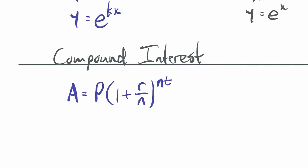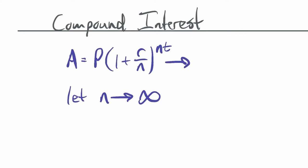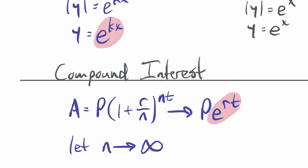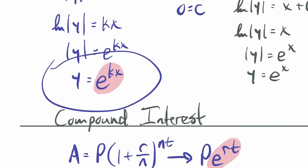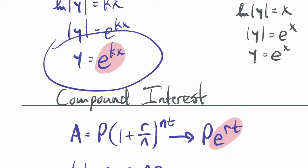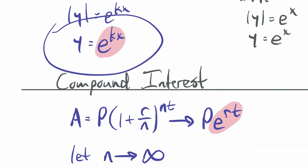What if you compounded monthly, weekly, daily, or infinitely often? If you let n go to infinity — the number of compounding periods per year — then the formula approaches P·e^(rt). That's continuous compounding. Notice that looks a lot like the solution y = e^(kx) we derived, because this differential equation models exactly what happens when the growth rate is proportional to the present amount.